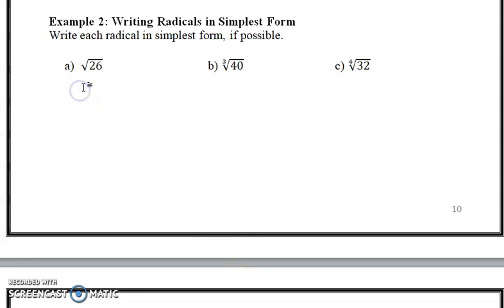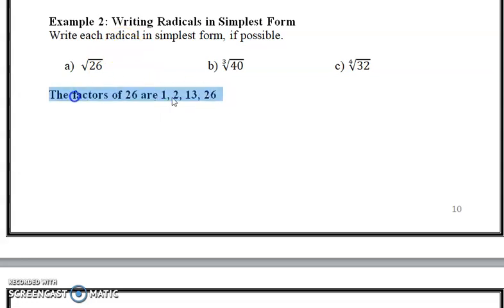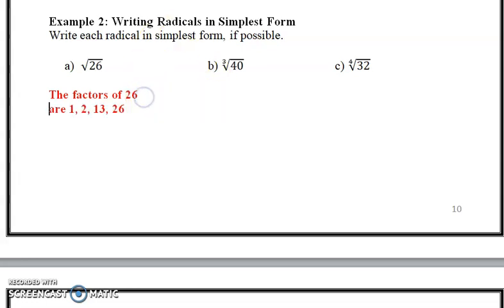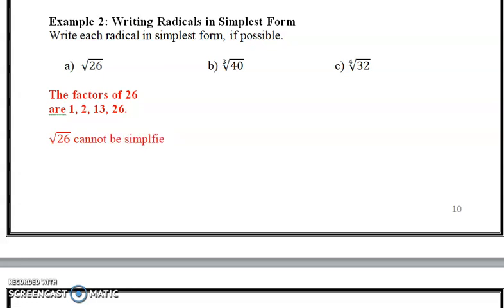In example 2a, we look at the square root of 26. I'm looking for any perfect square factors. The factors of 26 are 1, 2, 13, and 26. If you look at those factors, are there any perfect squares within the 4 factors of 26? The answer is no. Therefore, we say that the square root of 26 cannot be simplified.